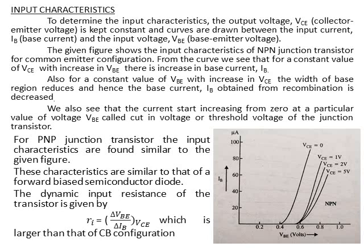In this case we have two characteristics: input characteristics and output characteristics. First we talk about input characteristics. To determine them, the output voltage VCE — the Collector-Emitter voltage — is kept constant, and curves are drawn between the input current IB and input voltage VBE. The given figure shows the input characteristics of an NPN junction transistor for Common Emitter configuration.